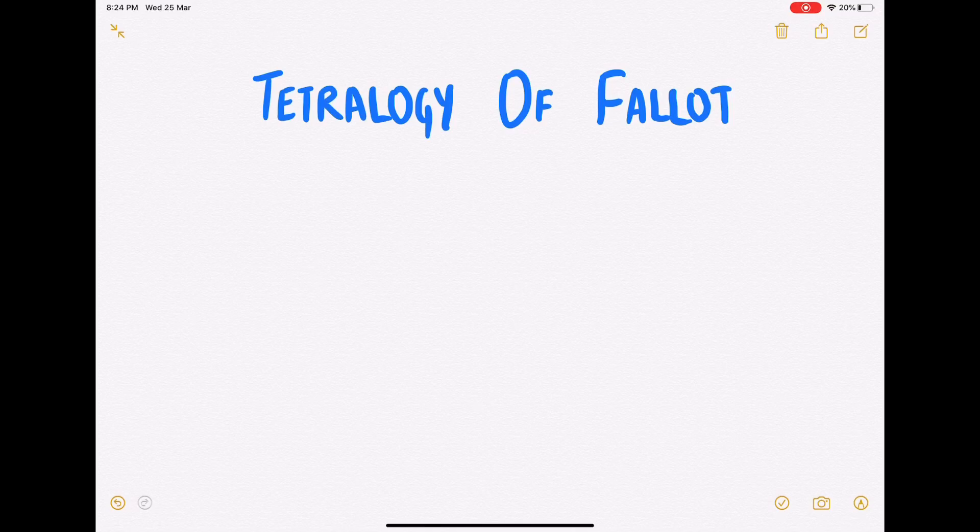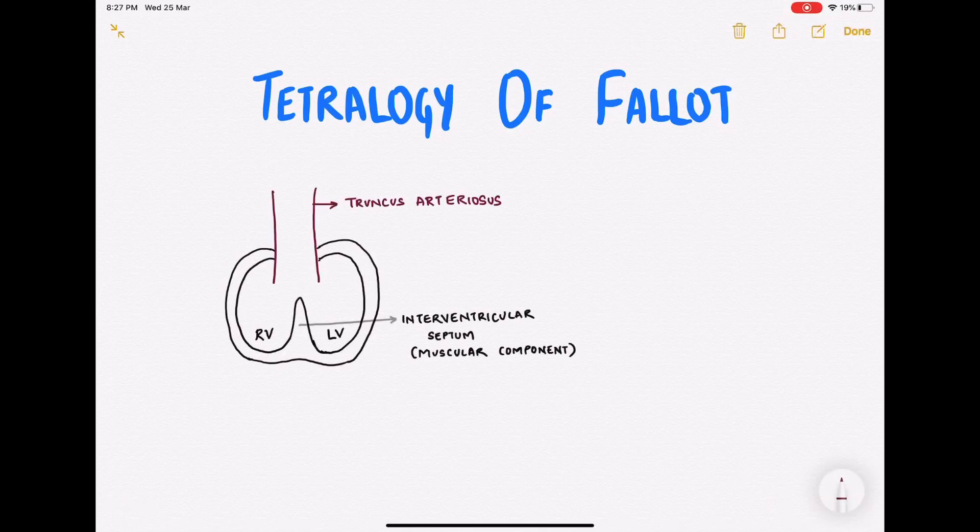Before we talk about that developmental error, let's look into the embryology - the development of aorticopulmonary septum, the septum that separates the aorta and the pulmonary artery. Here is a very simplified diagram. Let's see where in the development are we in this diagram. We have two ventricles, the right and the left ventricle, which have developed from the primitive ventricle.